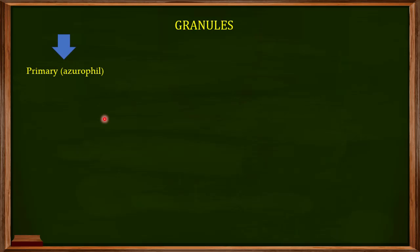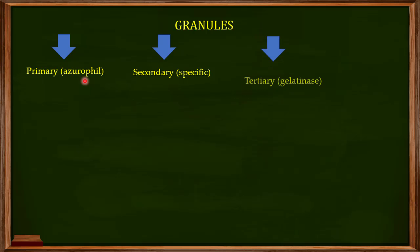The first are known as primary granules, also called azurophilic granules. The second class are the secondary granules, also known as specific granules. The third are the tertiary granules, also known as gelatinase granules. The last ones are known as the secretory granules.